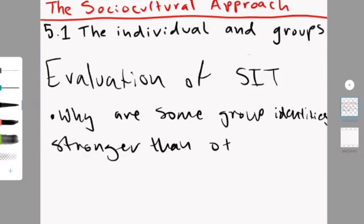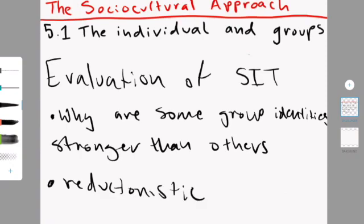Some things that are important is that this theory does not explain why some group identities are stronger than others. It can also be seen as quite reductionistic because if you have this theory in isolation it doesn't consider the environment you are in when you're interacting with these people, like if you're in a school and all the expectations that are put on you and stuff like that.